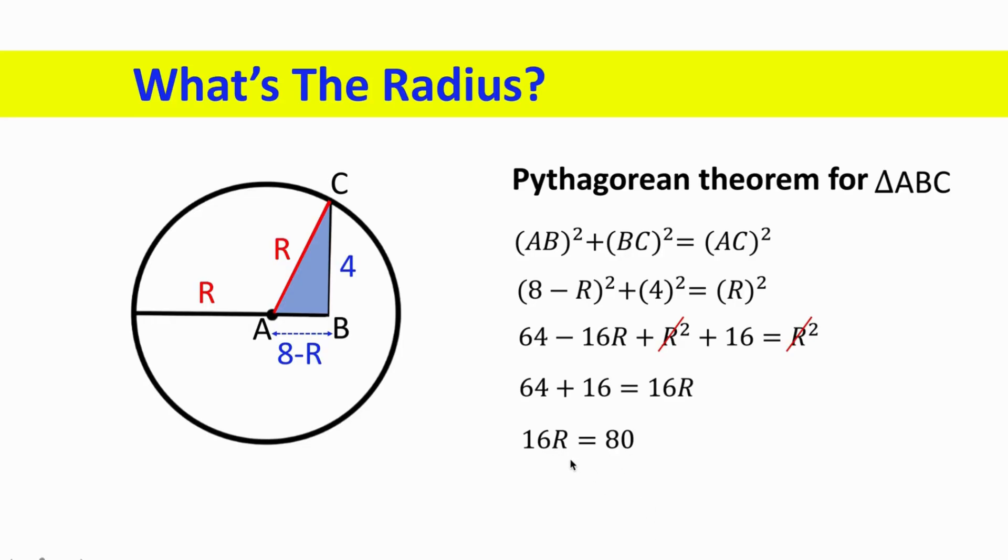To find R, we can divide both sides by 16. If we cancel 16 from the left side, we get R equals 5 units. Thank you for watching.